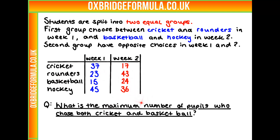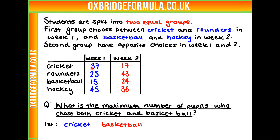Our question is: what is the maximum number of people who chose both cricket and basketball? We need to find out who chose both cricket and basketball. This takes into account the people in the first group who chose cricket in week 1 and then basketball in week 2, and people in the second group who chose basketball in week 1 and cricket in week 2.